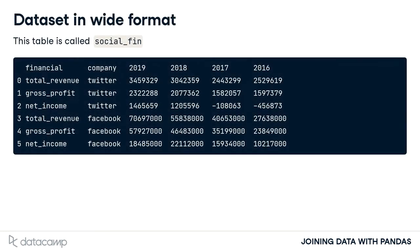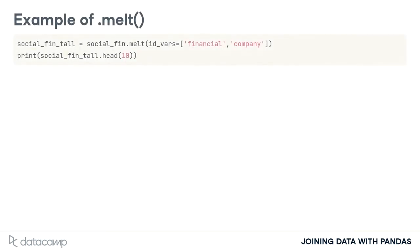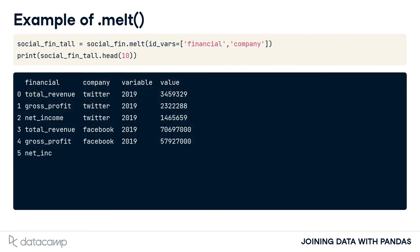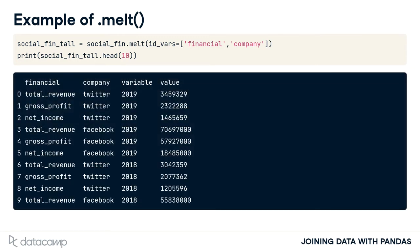To demonstrate the MELT method, let's start with this dataset of financial metrics of two popular social media companies. Notice that the years are horizontal. Let's change them so that they are vertically placed. Here, we call the MELT method on the table social_fin. The first input argument to this method is IDVars. These are columns to be used as identifier variables. We can also think of them as columns in our original dataset that we do not want to change. In our output, we print the first 10 rows.